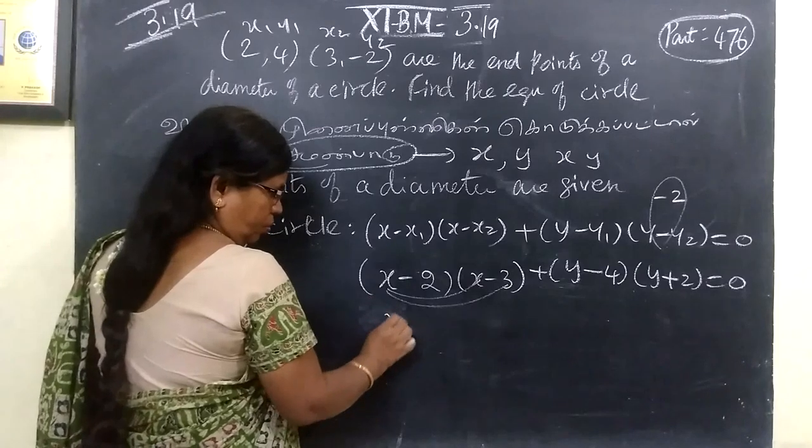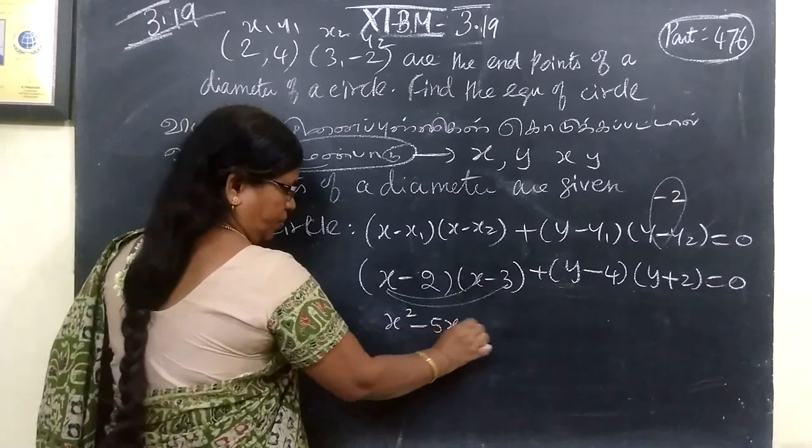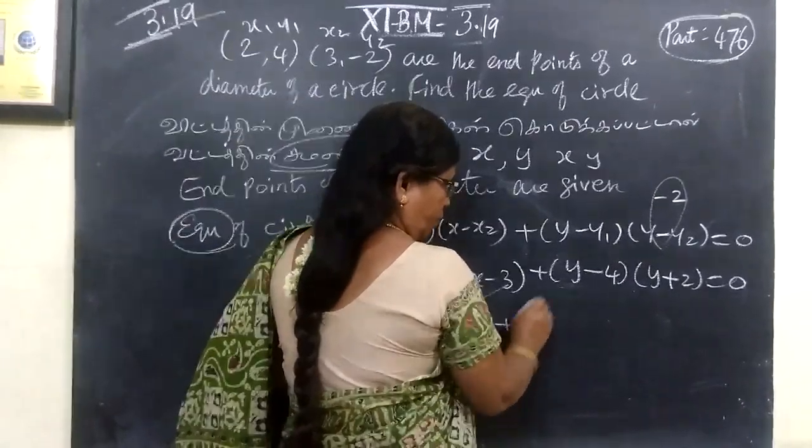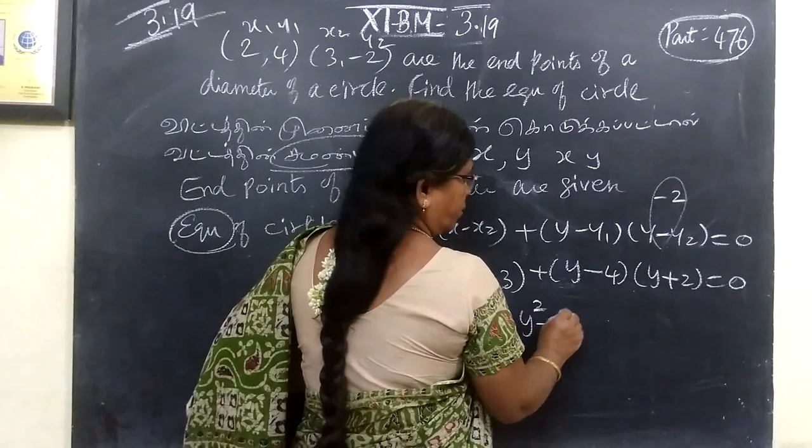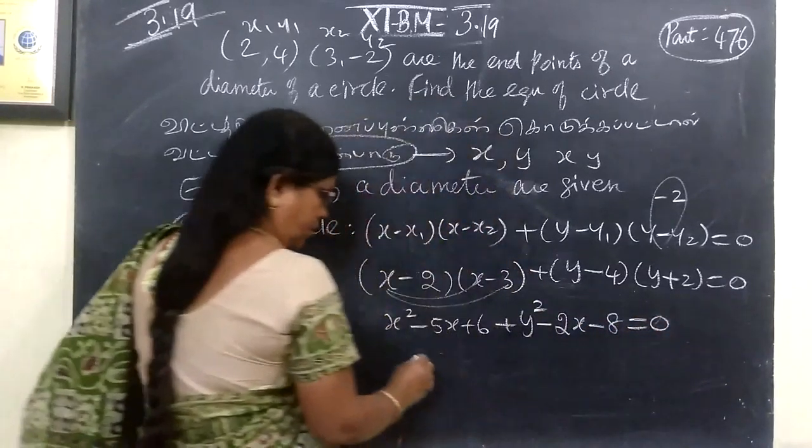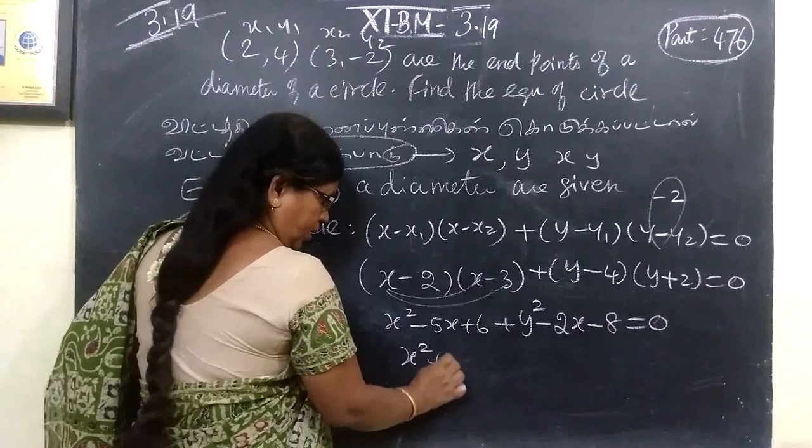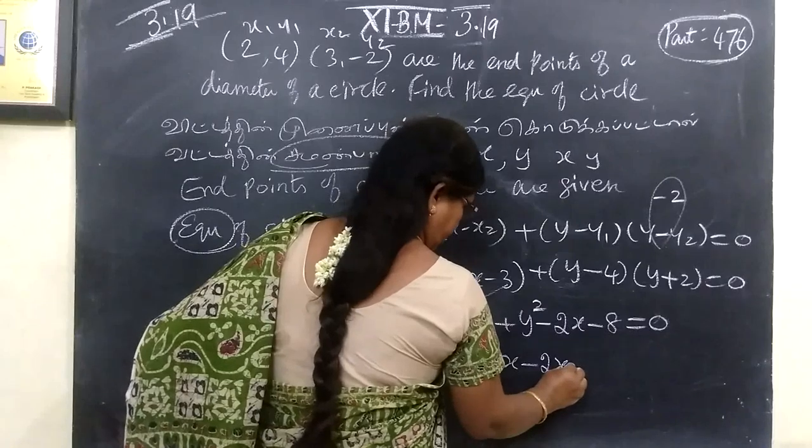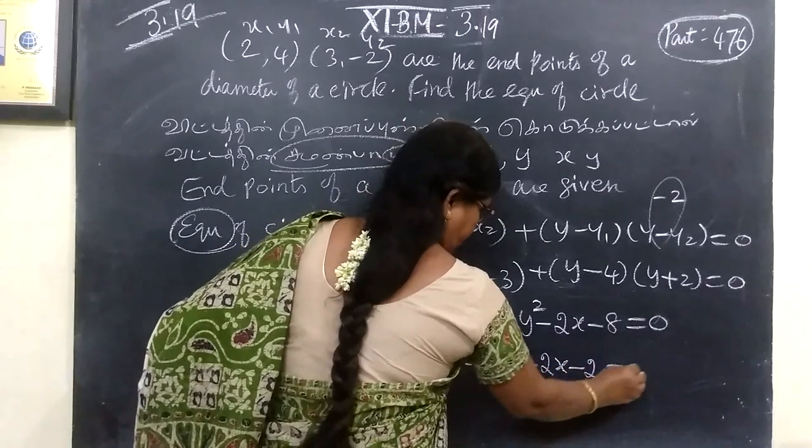So now multiply. X by X, it will be directly minus 5X. So x squared minus 5x plus 6.